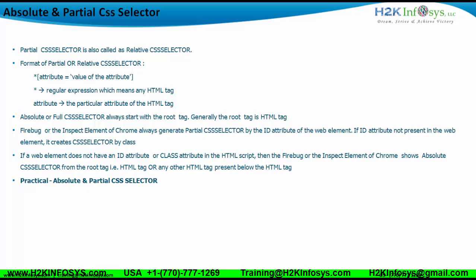An absolute or full CSS selector always starts with the root tag, which means the HTML tag. Firebug or the inspect element tool always generates a partial CSS selector by the ID attribute of the web element. If the ID attribute is not present, it will create the CSS selector using the class attribute. For an ID attribute it creates a hashtag followed by the value of the ID, and for class it creates a dot followed by the value of the class.